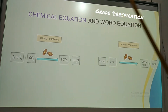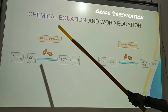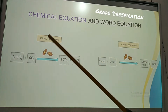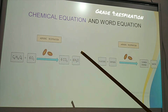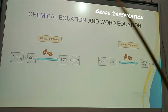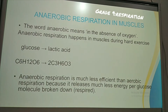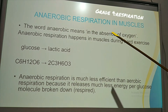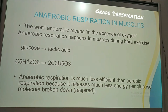Let's do a quick recap. Aerobic respiration is the breakdown of food molecules in the presence of oxygen. Glucose is broken down with oxygen to give CO2, water, and a large amount of energy. Anaerobic respiration means in the absence of oxygen. Aerobic is in the presence of oxygen; anaerobic is in the absence of oxygen. Oxygen is not present — it is breaking down food molecules in the absence of oxygen.